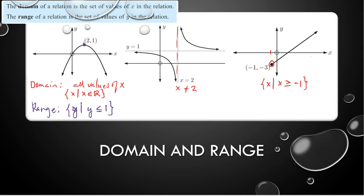How about here? I can use this notation also. And here, y such that y is not equal to 1 — it is very near y equals 1, but it doesn't touch y equals 1. So that is your limitation.